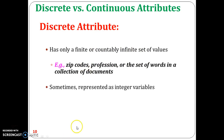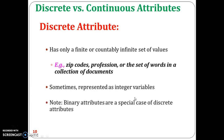Sometimes discrete attributes are represented as integer variables as well, though as stated, this is not required. A special case of discrete attribute is the binary attribute, where the outcome is either 0 or 1 — these are numerical values, making binary attribute a special case of discrete attribute.